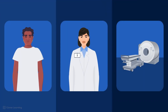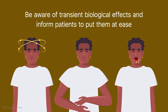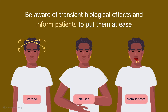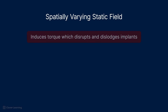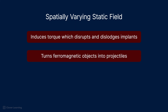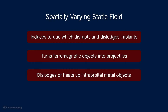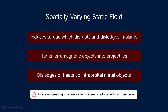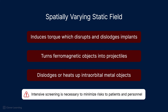In summary, the spatially varying static field in MRI presents a number of specific safety issues to both patients, MRI personnel, and the MRI scanner itself. It is important to be aware of the transient biological effects such as vertigo, nausea, or a metallic taste and inform patients to put them at ease. The spatially varying static field can also induce torque which disrupts and dislodges medical implants, turns ferromagnetic objects into projectiles, and can dislodge or heat up intraorbital metal objects. Intensive screening is necessary to minimize these risks to both patients and personnel.